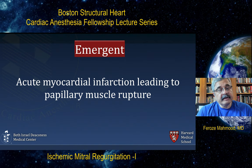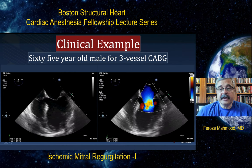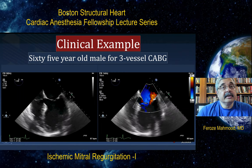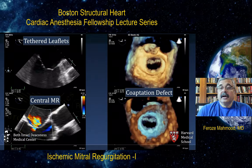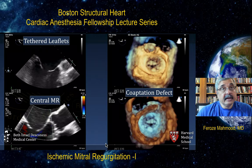Now let's go over a few incidental cases of mitral regurgitation. This is a 65-year-old male for three-vessel coronary artery bypass graft surgery. This is the mid-esophageal four-chamber view. You can see the ventricular function is significantly depressed, and there is some mitral regurgitation with both a central and an eccentric component. As you can see, there are tethered leaflets and central MR. When you look at it in three-dimensional left atrial en face view, it demonstrates a coaptation defect right in the middle of the A2 and P2 scallops.